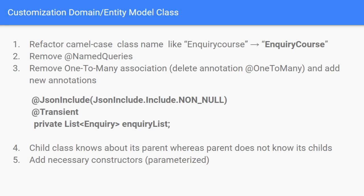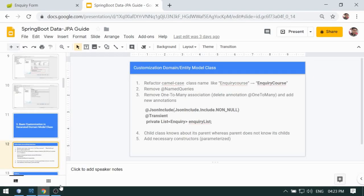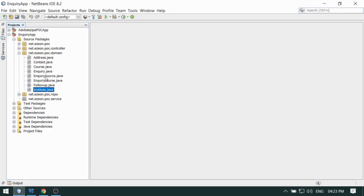When you see the generated class, for example with a field like 'inquiryCourseC' with a lowercase C, I require it to be 'inquiryCourse' with a capital C, because there are two words and I am using camel case naming convention. So this is the change required here, and we have already done this.